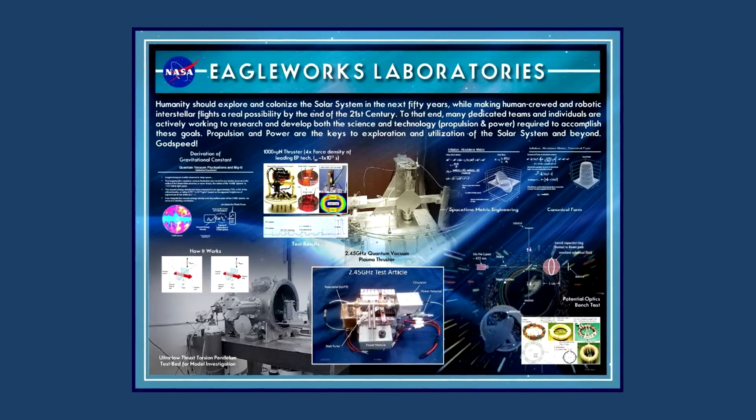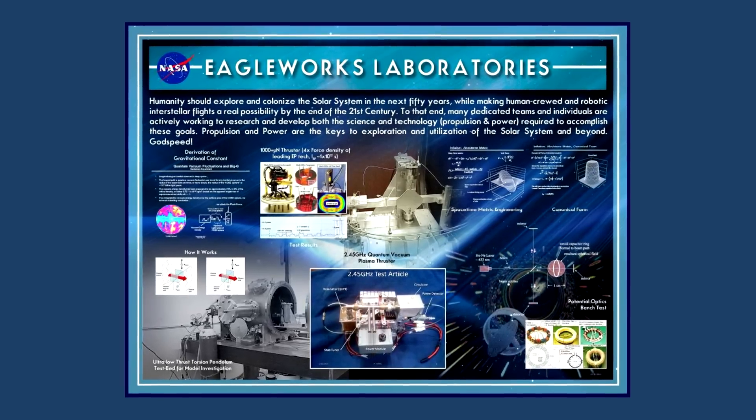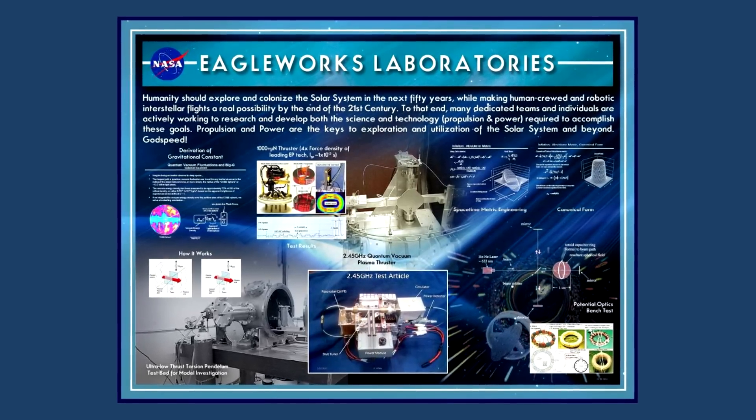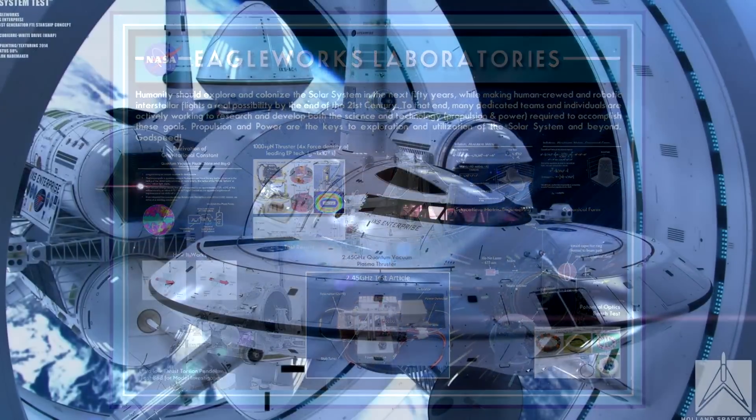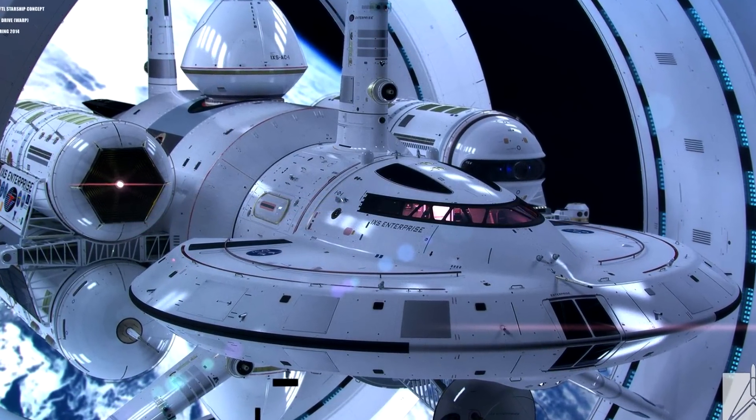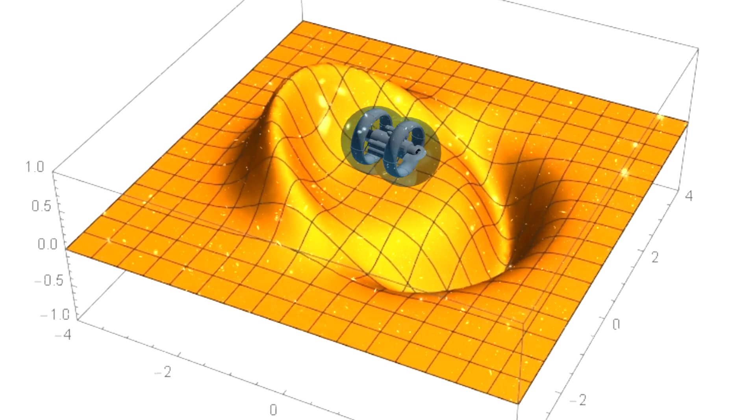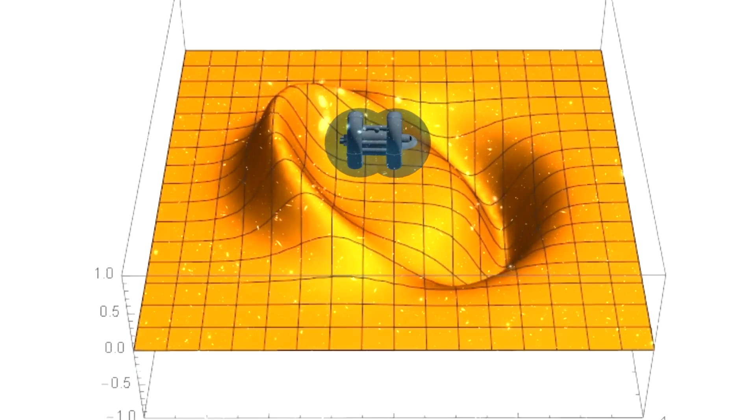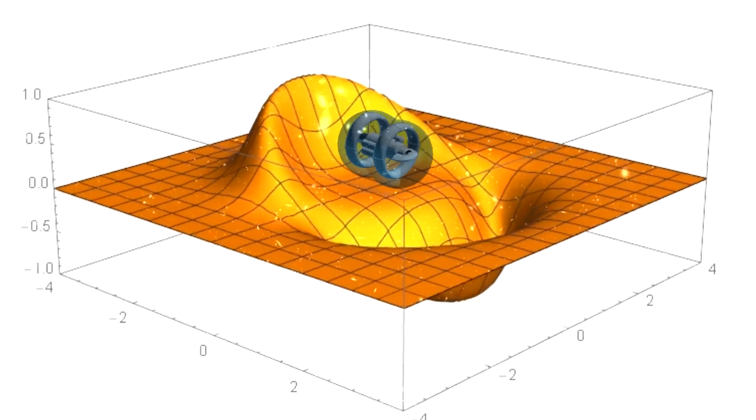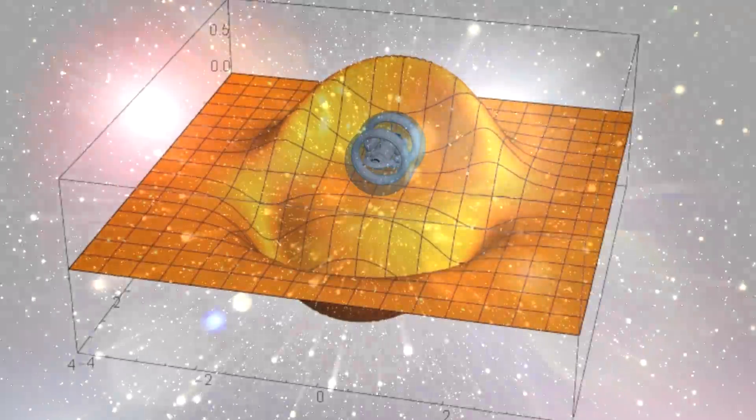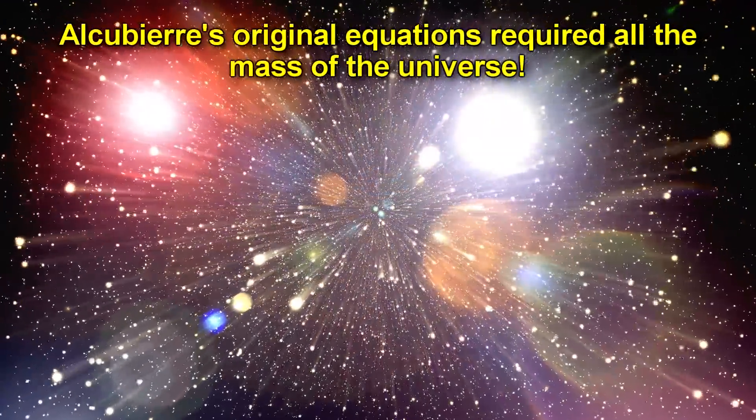There is a group at NASA called the Advanced Propulsion Team, also known as Eagle Works, who is working with this assumption. And they have even created an artist's rendering of what a warp drive spaceship would look like. They even call it the Enterprise. Alcubierre's original warp bubble around a spaceship would have required a lot of negative energy. The energy equivalent, in fact, of all the mass in the universe. So it was obviously not feasible.